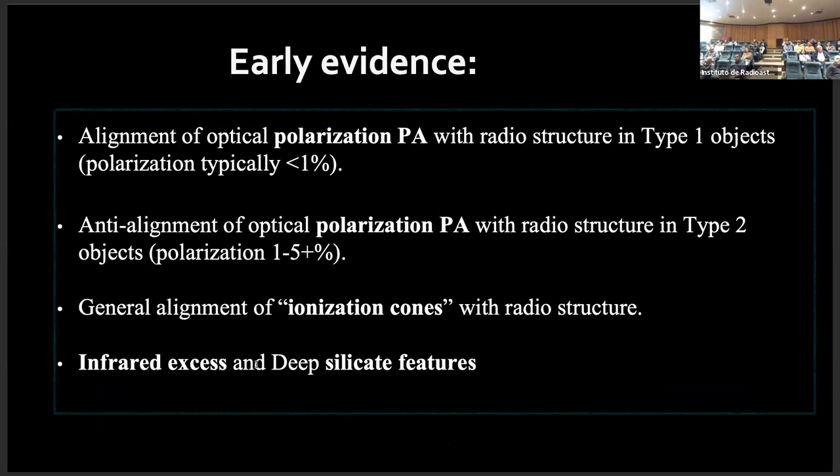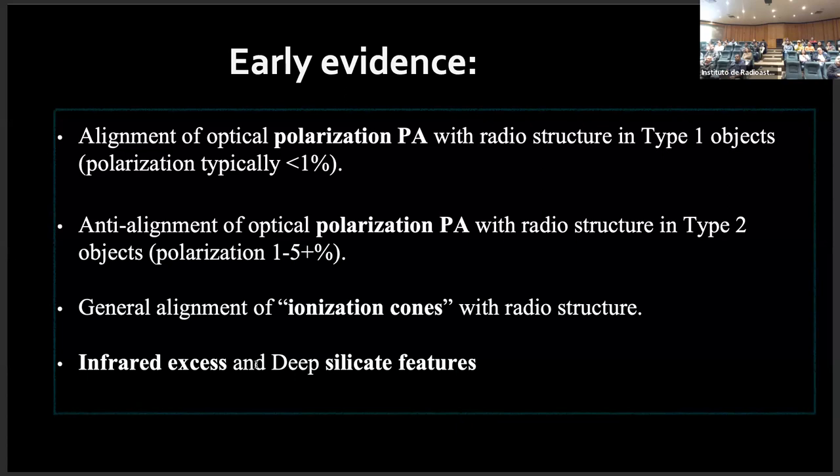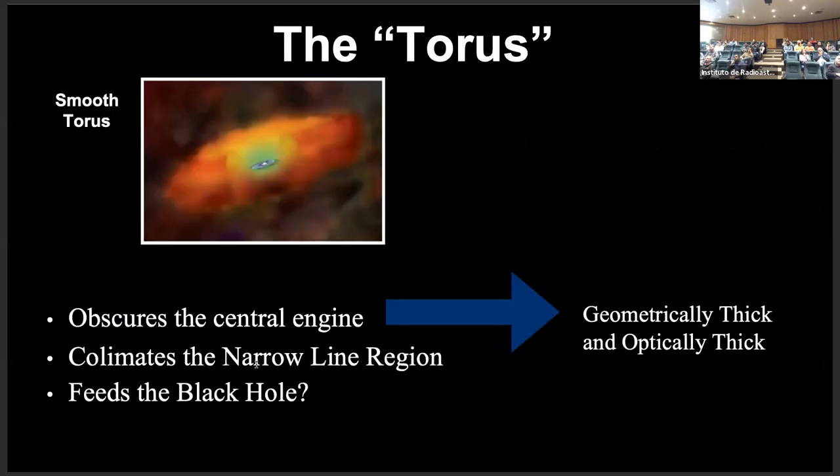It depended on the inclination angle that we were looking through. Then we will see either type ones because we will be looking at the very center of the AGM, or type twos because the torus, the dust will be blocking the photons coming from the accretion disk and broad line region. And then we will see only actually only the narrow lines. So in this case we see narrow lines and broad lines, in this case we only see the narrow lines because the broad lines are blocked by the torus.